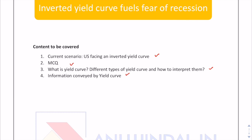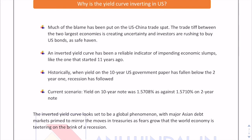Moving further and starting with the first topic: why is the yield curve inverting in the US? We all know that the US and China have been involved in a trade war. These are the two largest economies and they are creating uncertainty around the globe, and because of it many trade tensions are also there. Investors are now uncertain and are rushing to buy US bonds as a safe haven. An inverted yield curve doesn't indicate good economic conditions; it is associated with economic slumps and recession. Earlier in the US, when there was an inverted yield curve, recession followed immediately after.